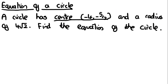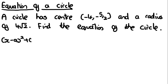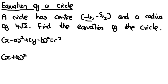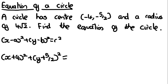They could also ask you to do it in reverse, where they give you the center and the radius and you write the equation. Remember the equation is x minus a, squared, plus y minus b, squared, equals r squared. All you need to do is plug in the values. For example, the equation becomes x plus 4, squared, plus y plus 5 over 2, squared, equals 4 root 2, squared — which equals 32.